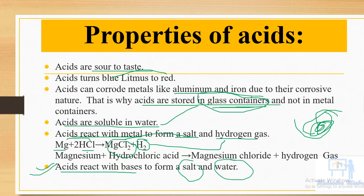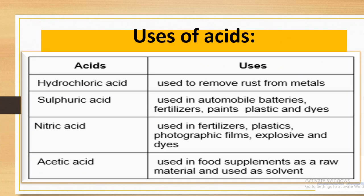Now let's talk about the uses of acids. Hydrochloric acid (HCl) is used to remove rust from metals. Sulfuric acid (H2SO4) is used in automobile batteries, fertilizers, paints, plastics, and dyes. Nitric acid (HNO3) is used in fertilizers, plastics, photographic films, explosives, and dyes. Acetic acid is used as a raw material and as a solvent.